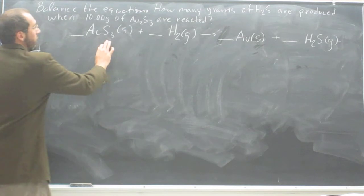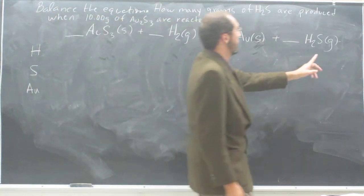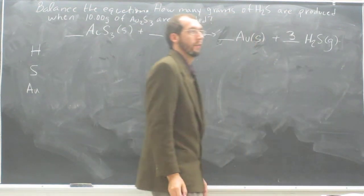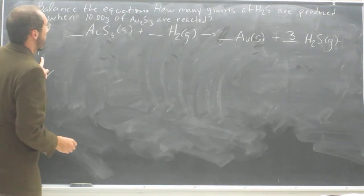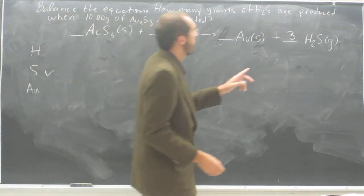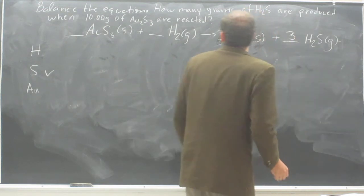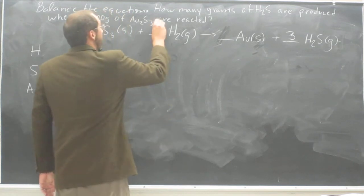We should have actually balanced sulfur first, sorry. So we've got three sulfurs here, and only one sulfur here, right? So we need to put a three there. So sulfurs are now balanced. Now let's look at hydrogen. Well, we've got two times three, that's six over here, right? Well, we only have two over here, so we need to multiply that by three.